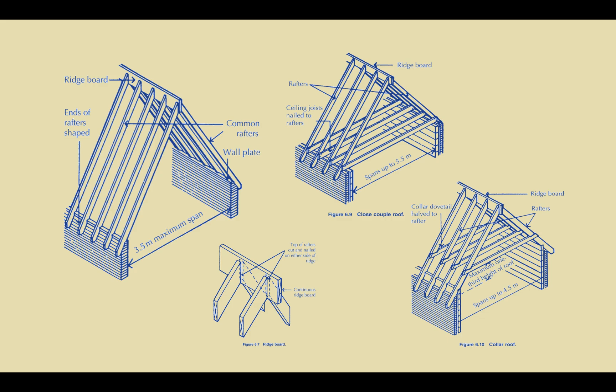Moving forward from a couple roof you'll start seeing how these are modified to create broader spans such as a closed couple roof where the addition of the horizontal members now allow us to span up to 5.5 meters and similarly the collar roof as well.